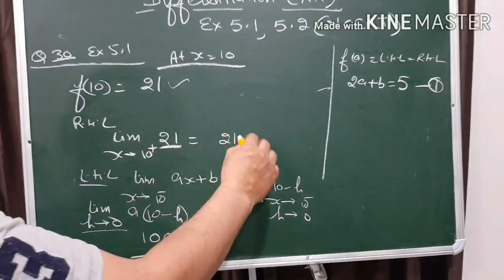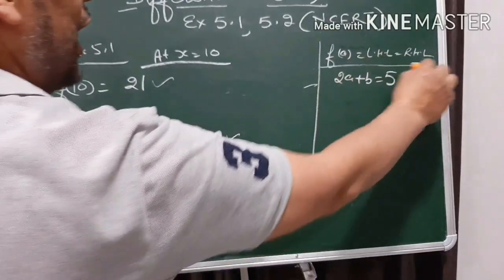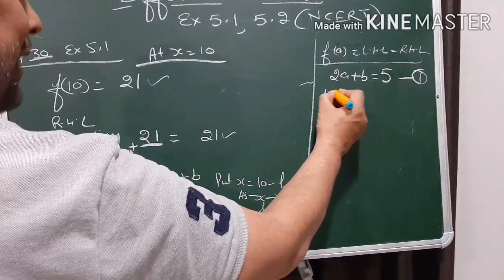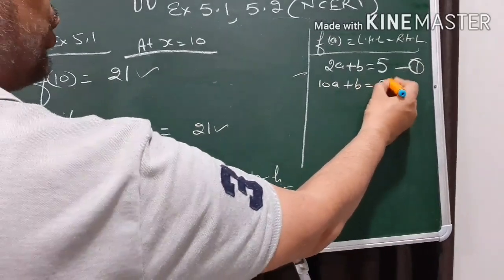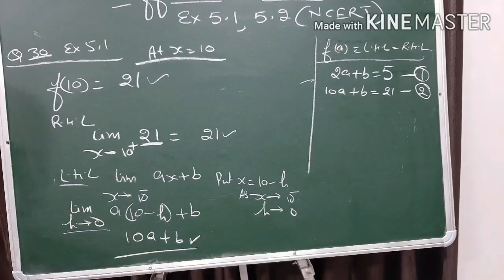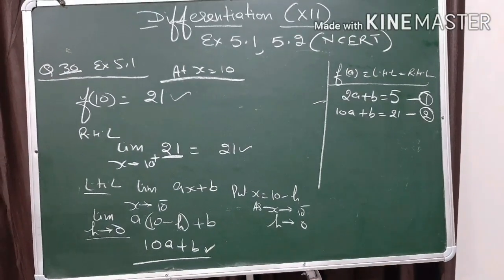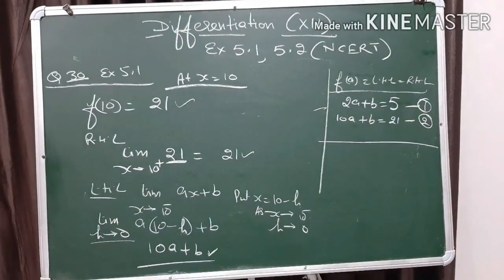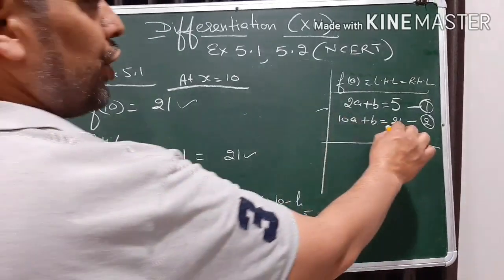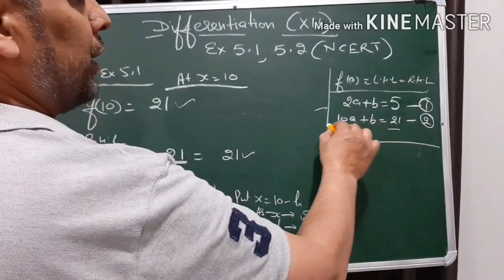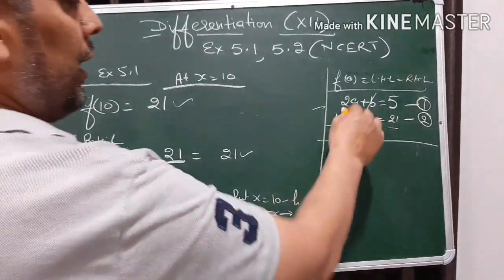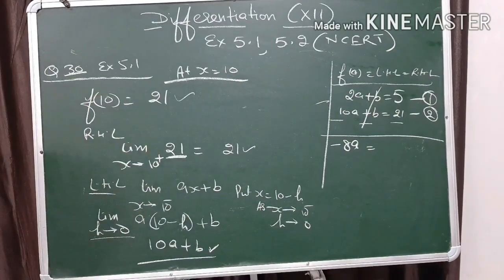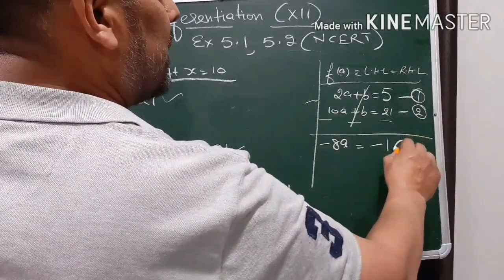Since the function is continuous, f(a) equals the left hand limit equals the right hand limit. So the second equation is 10a plus b equals 21. Now using the method of elimination — subtracting equation 1 from equation 2 — b is eliminated. We get minus 8a equals minus 16, so a equals 16 divided by 8, which means a equals 2.